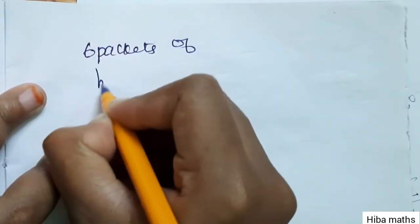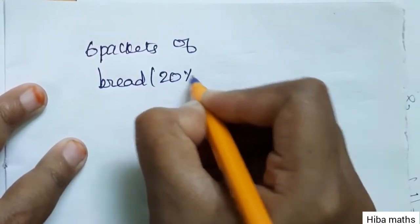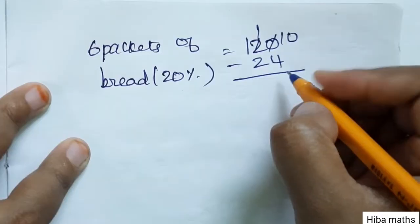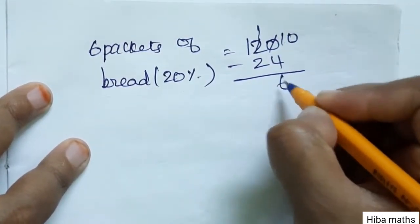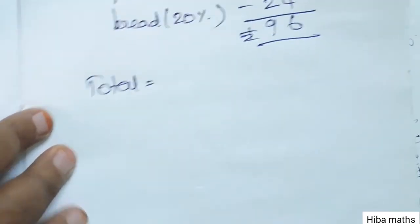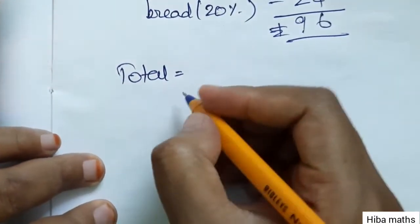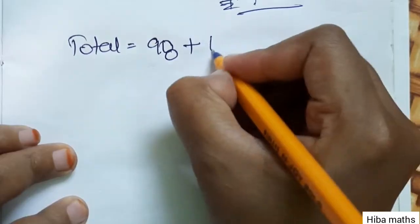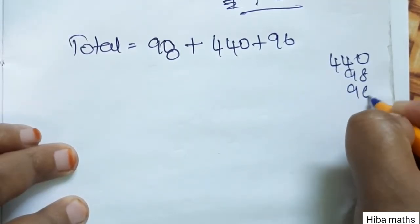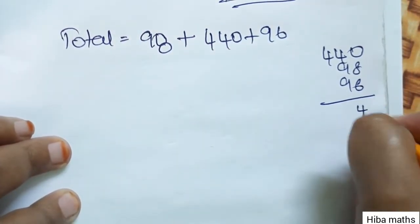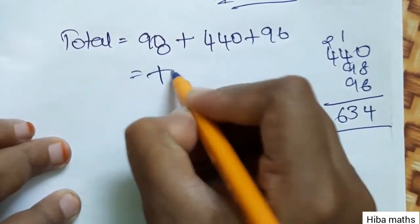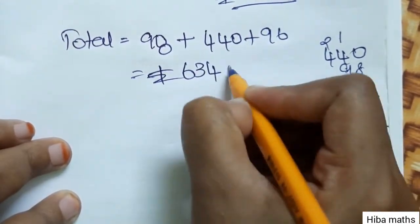Now, bread. 6 pockets of bread at Rs.20 each = Rs.120. 20% of Rs.120 is Rs.24. So the offer price for 6 pockets of bread is Rs.120 − Rs.24 = Rs.96. Now adding the totals: 98 + 440 + 96. 8 plus 6 is 14, carry 1; 9 plus 4 plus 9 plus 1 is 23, carry 2; 4 plus 2 is 6. Total is Rs.634.